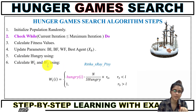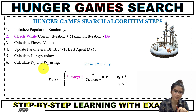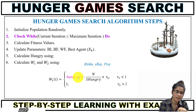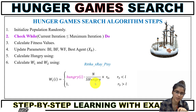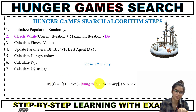Next, we calculate w1 and w2, which represent the weight of hunger. w1 and w2 are also used to prevent the algorithm from getting stuck in local optima. To calculate w1: hungry_i is the hunger value calculated for each individual, s_hungry is the sum of all hunger feelings for all individuals, r3 and r4 are random values, and small l is a user-defined parameter used to improve the algorithm. w2 is calculated using a similar equation involving the hunger value and the sum of all hunger values with random values.